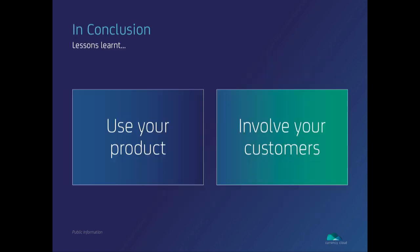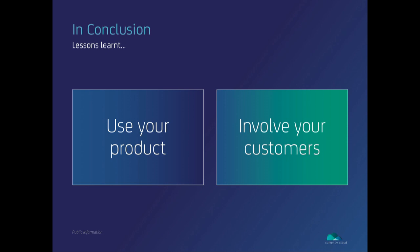There were two things we learned throughout this process. The first is: use your product. By developing Direct at the same time as the API, we were able to find any logical inconsistencies before our customers did, and most importantly, find any problems before our customers did. The second thing is: involve your customers. By speaking to them and understanding their needs, our system really improved. They use your product daily and understand what's important — and your systems will definitely improve as a result. Customers do appreciate being involved in the process.